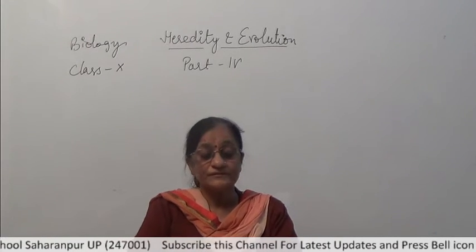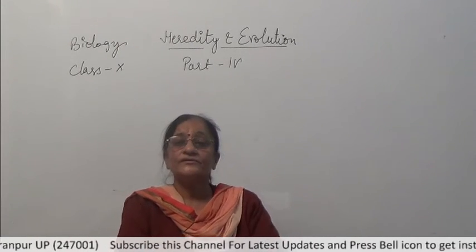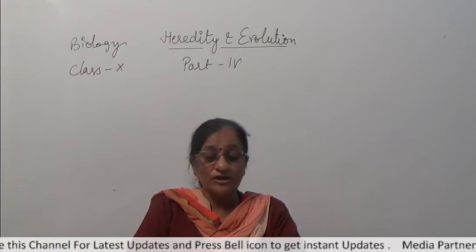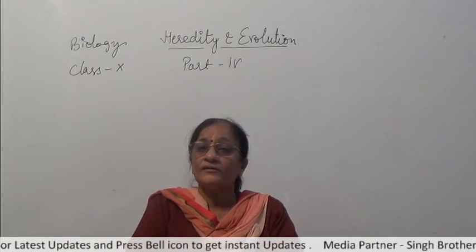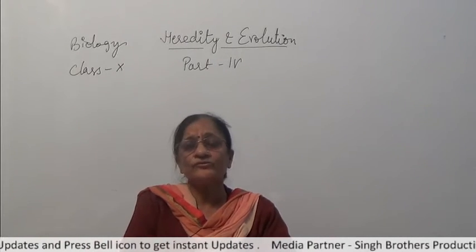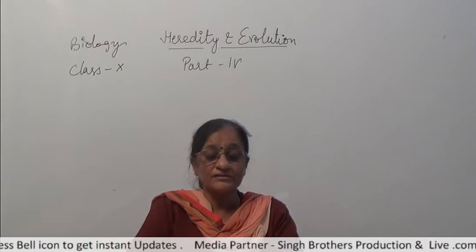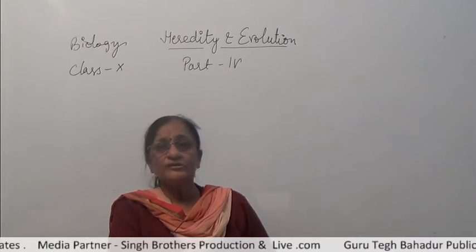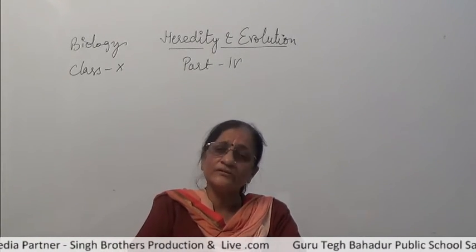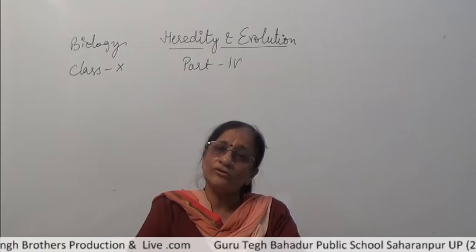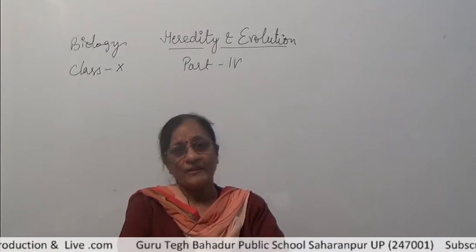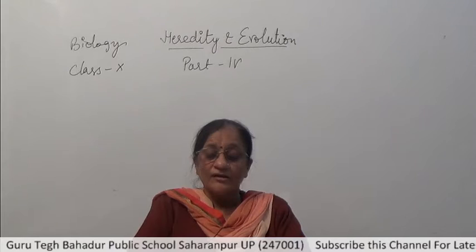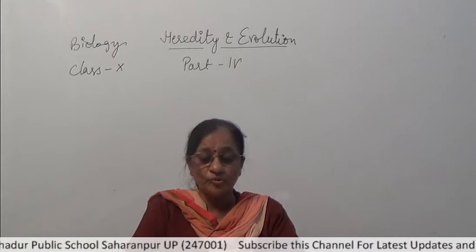Good morning students. Yesterday we discussed dihybrid cross, that is a cross involving two characters, and before that we discussed monohybrid cross, which is a cross having one character. We took the example of tallness or dwarfness — two traits of the character height.